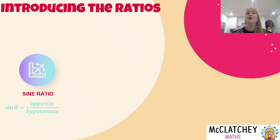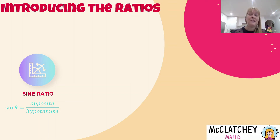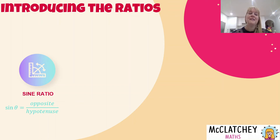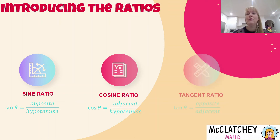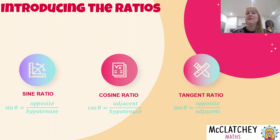I'm going to introduce three different ratios used to work with trigonometry, all relating to the different sides of the triangle with respect to that particular angle. The first is the sine ratio: sine of theta equals the opposite side's length divided by the hypotenuse length. The second is the cosine ratio: cosine of theta equals the adjacent length divided by the hypotenuse length. The third is the tangent ratio: tangent of theta equals the opposite side divided by the adjacent side.